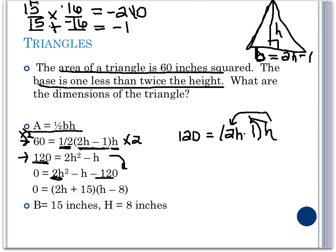Therefore, if we use our factor by grouping, we could rewrite the negative h as a positive 15h minus 16h. And then we could factor by grouping. Looking at the first two terms, we can factor out an h, giving us 2h plus 15.